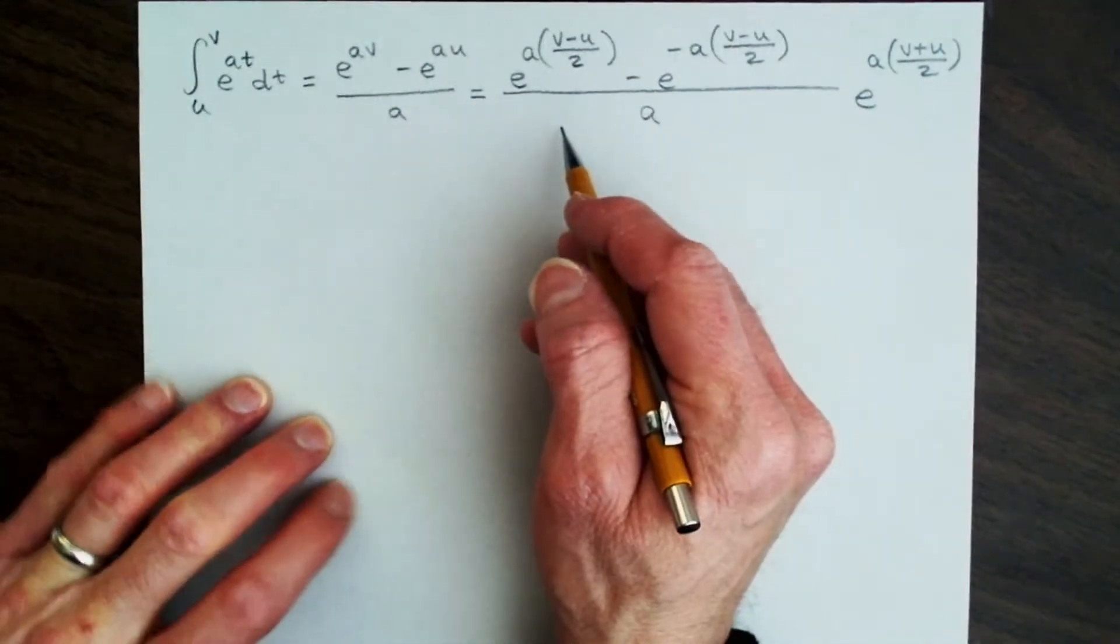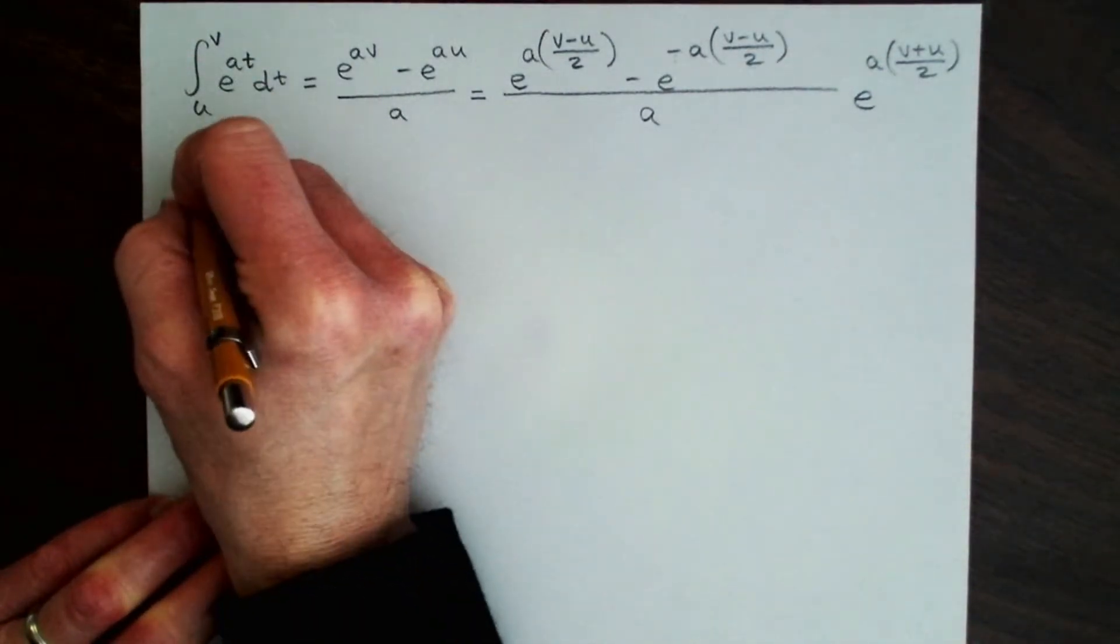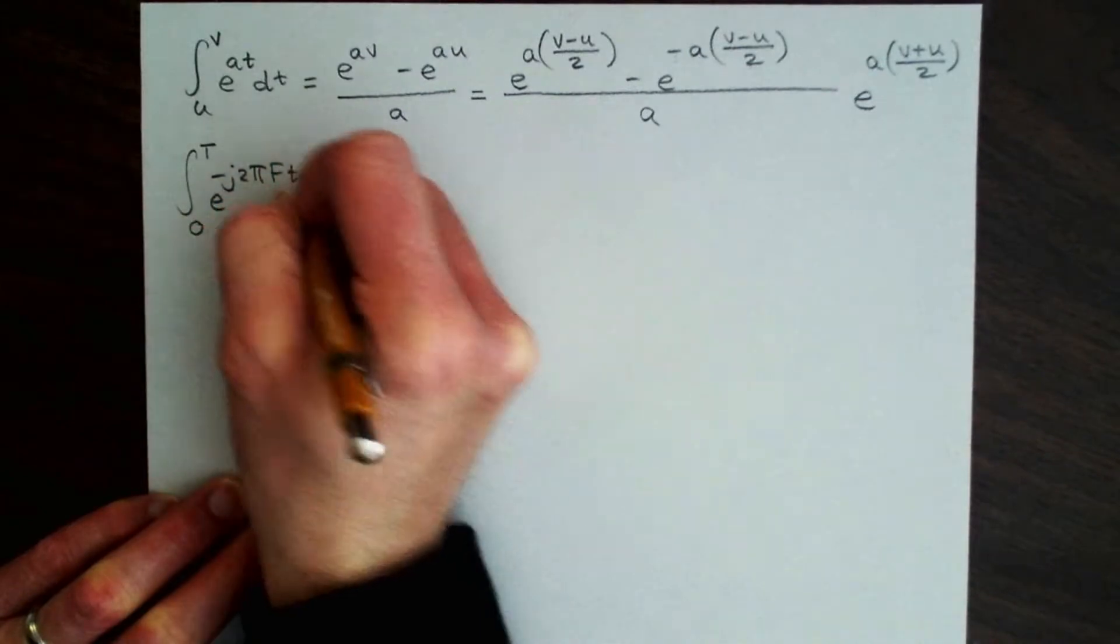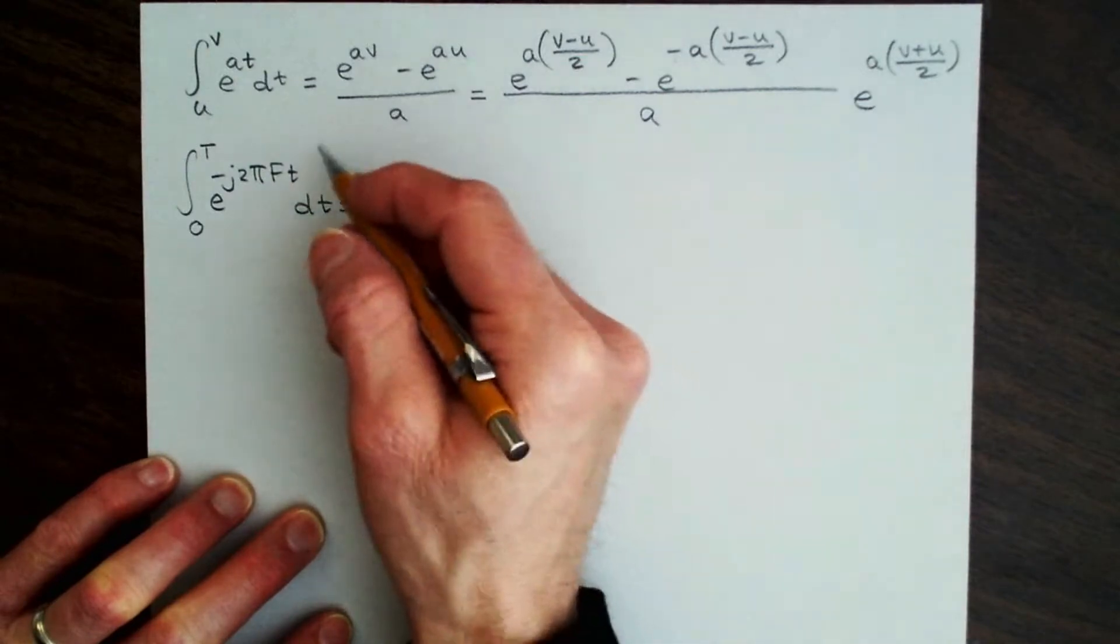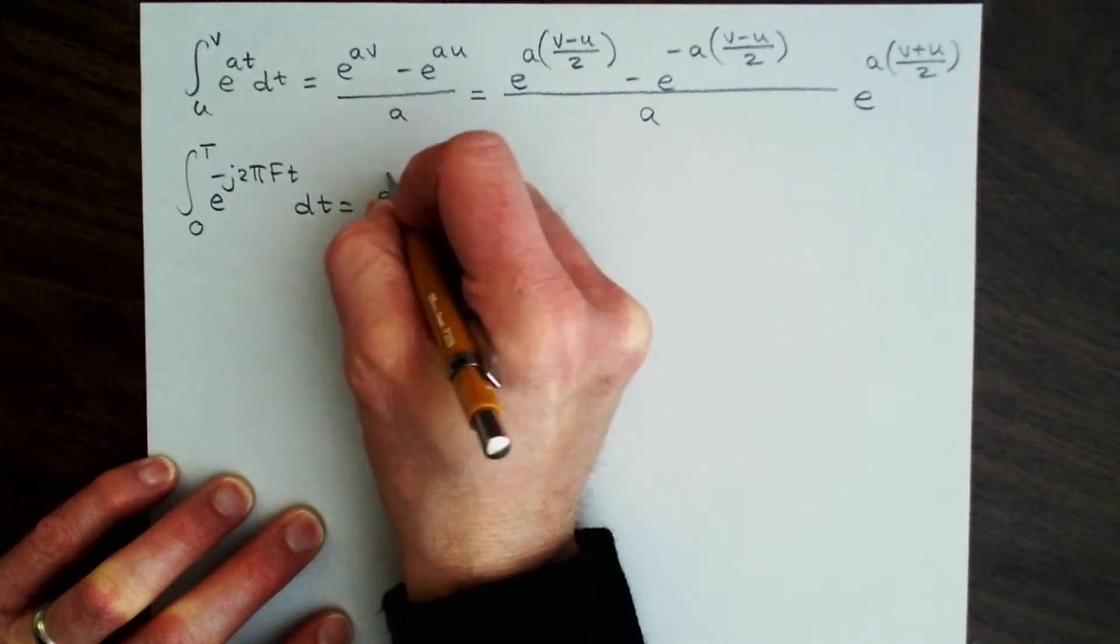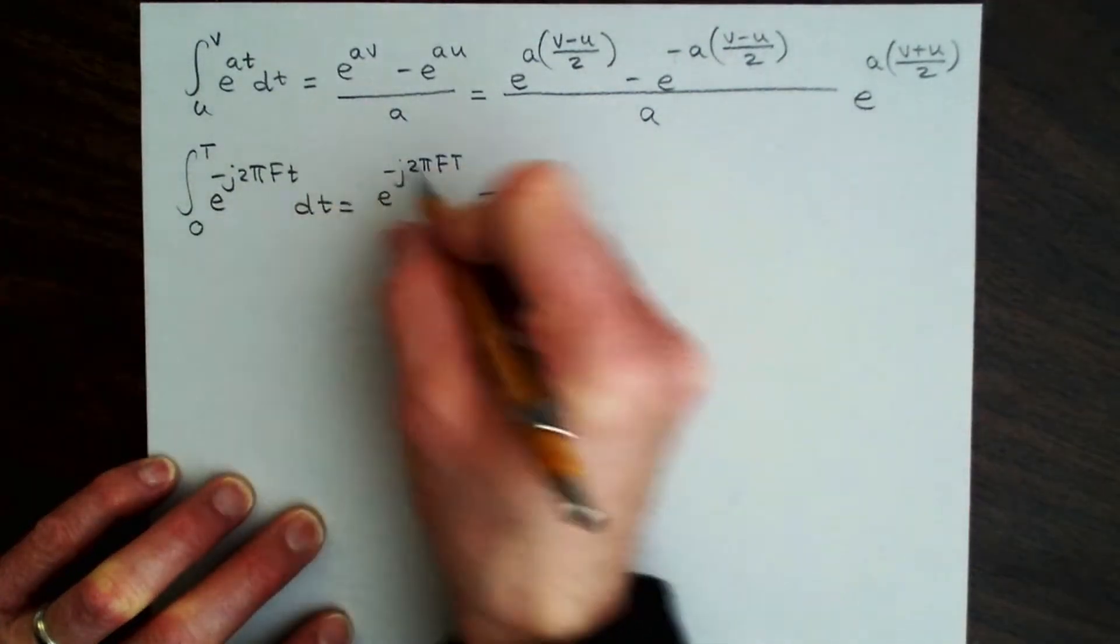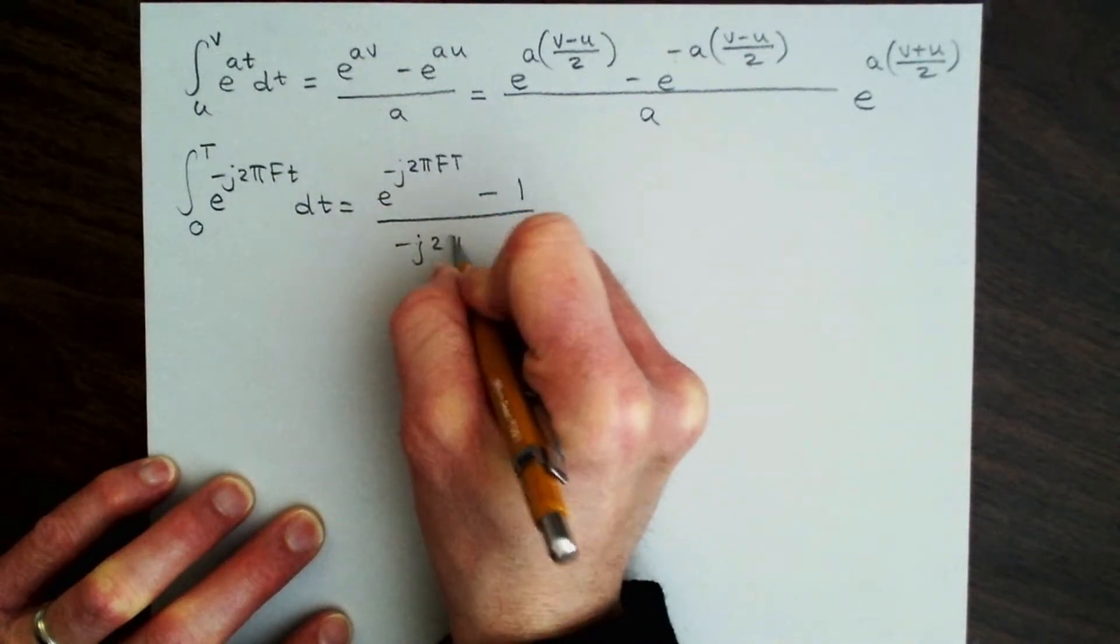But this form is useful when the interval is not a symmetric interval. So, for example, let's consider the following. What if I integrate from 0 to T, e to the minus j 2π f t dt? Well, we can write this down in the first form, which is e to the minus j 2π f T, and then we would have minus e to the 0, or e to the 0, so that would be 1, divided by minus j 2π f.